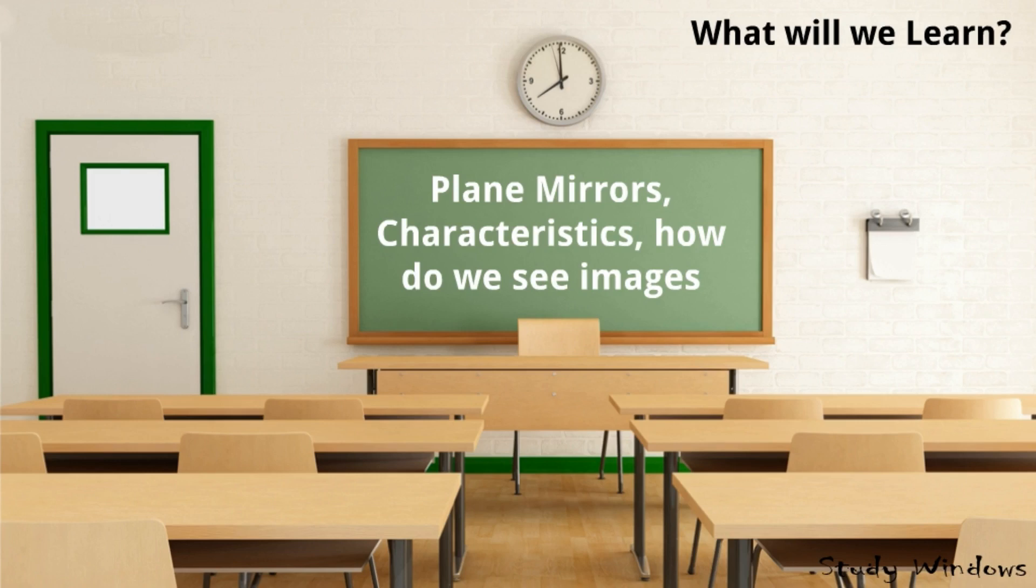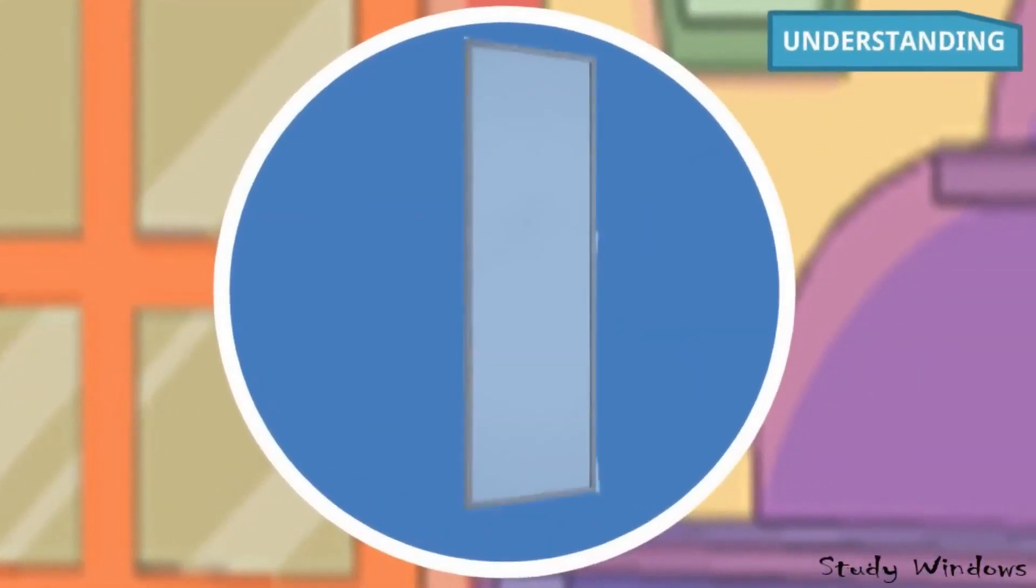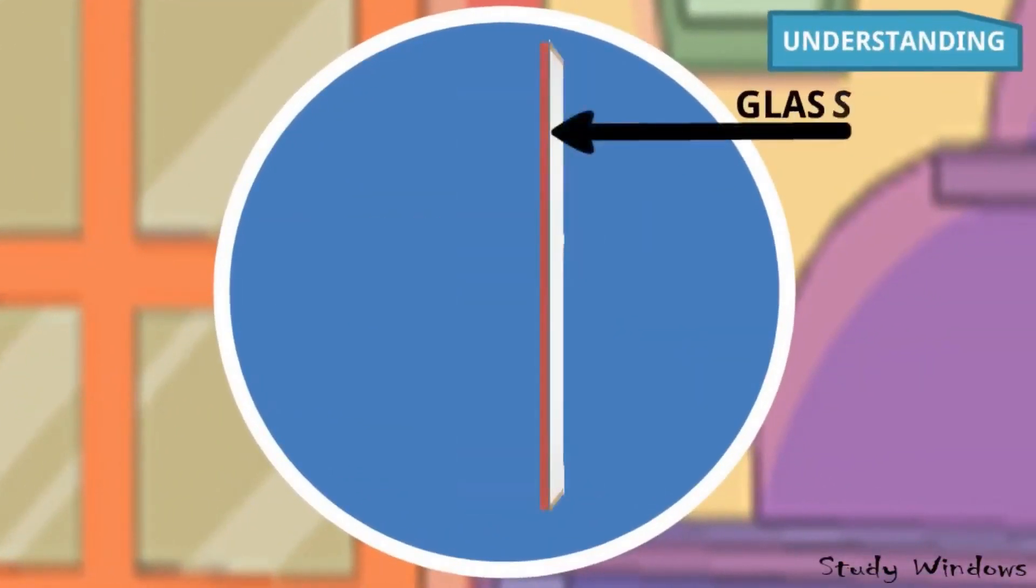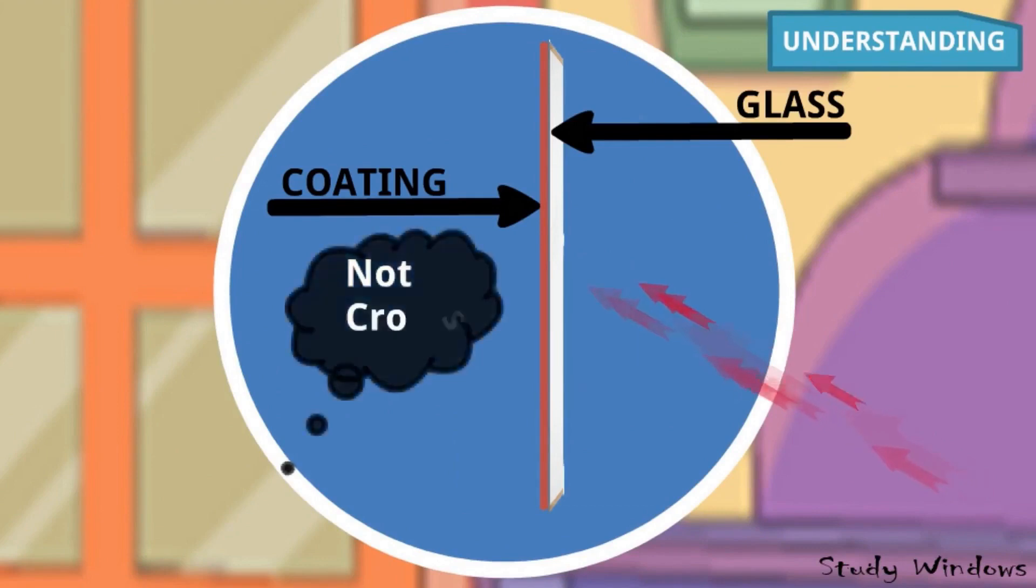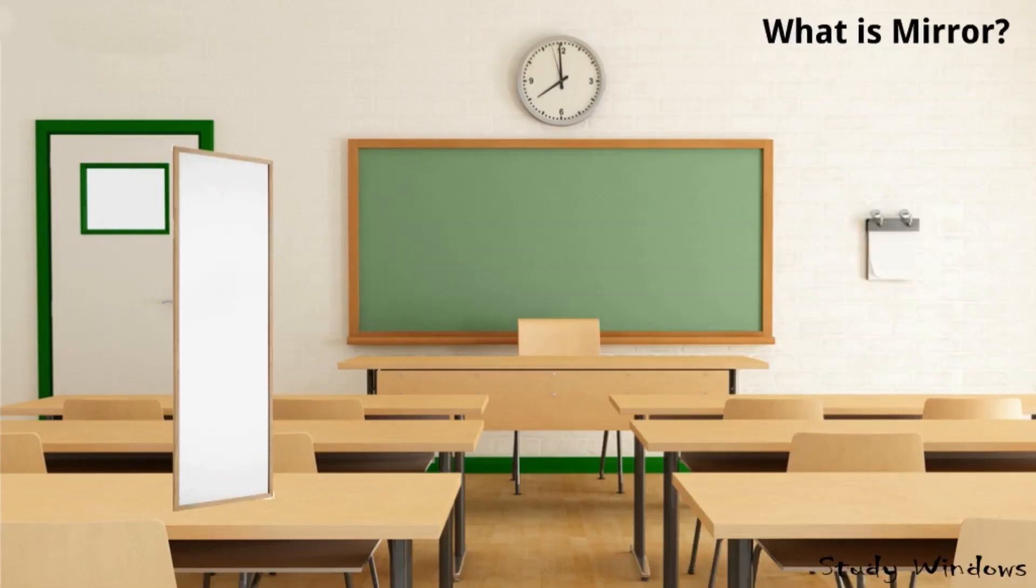How do we see our image? All these things will be detailed in this session. So, a mirror - see this portion is the glass and this is the coating in the back side. If you see the red coating, light is falling on the mirror and cannot cross the mirror because of the coating.